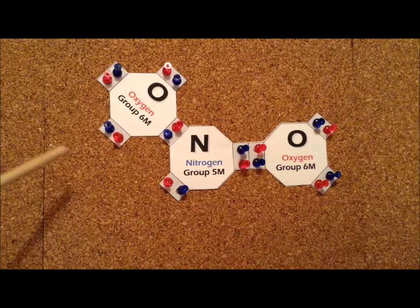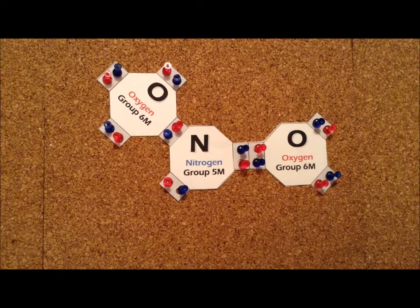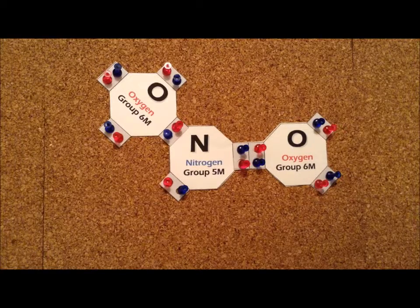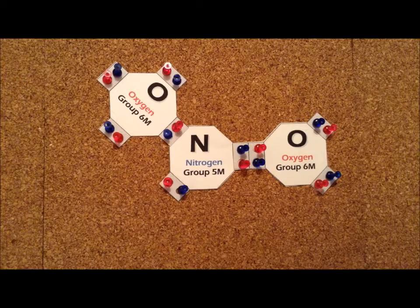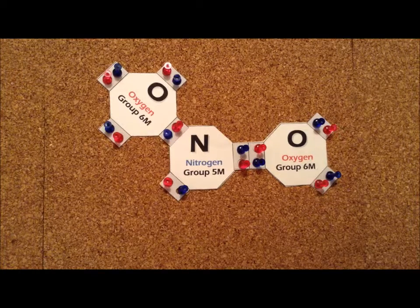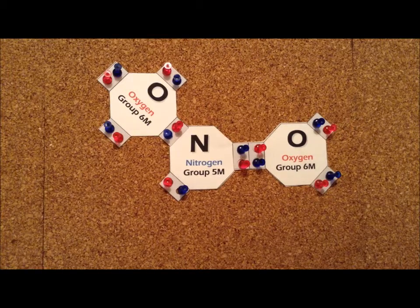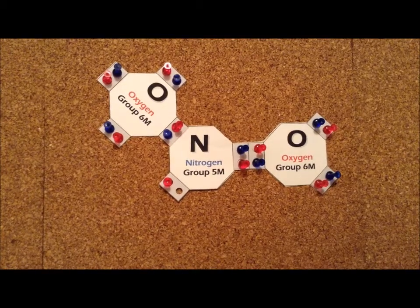To form the Lewis structure for nitrogen dioxide, we realize that we have two oxygen atoms, each of which contributes six electrons, one nitrogen atom, which contributes five. So we end up with a system that has a total of 17 electrons. So right away, we recognize that we have an odd electron system. Therefore, it has to be a free radical.